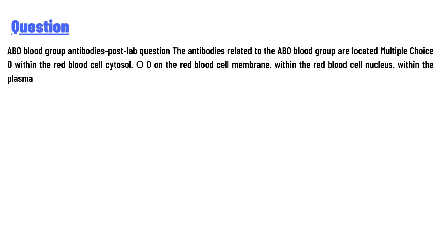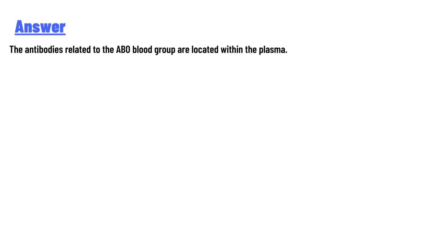The question: the antibody related to the ABO blood group is located — look at the multiple choice — within the red blood cell cytosol, on the red blood cell membrane, within the red blood cell nucleus, or within the plasma?